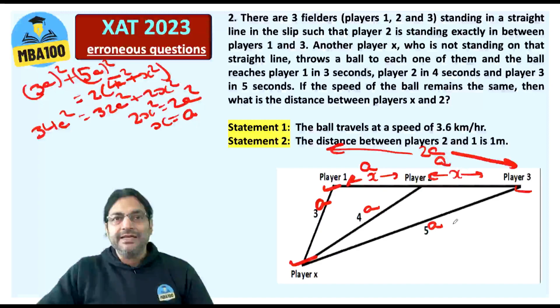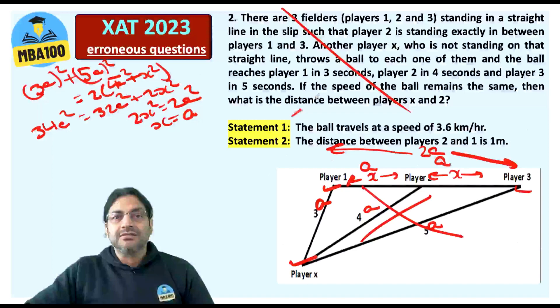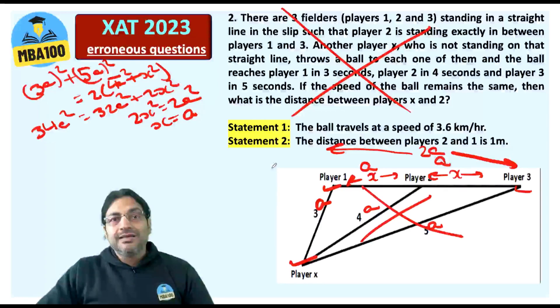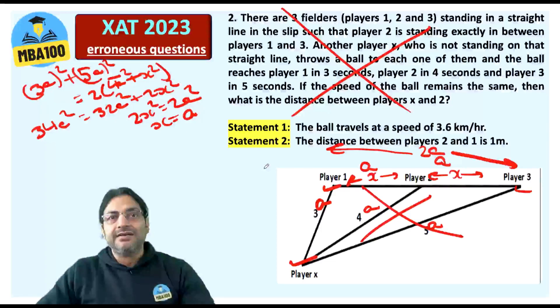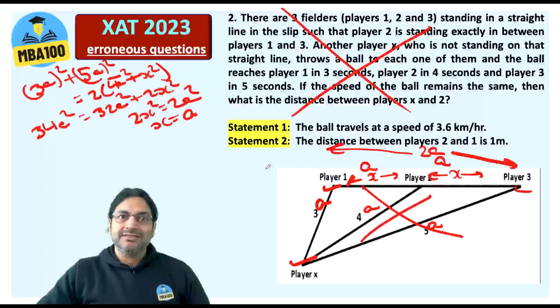Is that possible? In any triangle, sum of the two sides is always greater than the third side. So this is not possible. Many people have been discussing whether the answer should be only option A or option A as well as option B. But please, when this data itself is inconsistent, how can you get the answer?